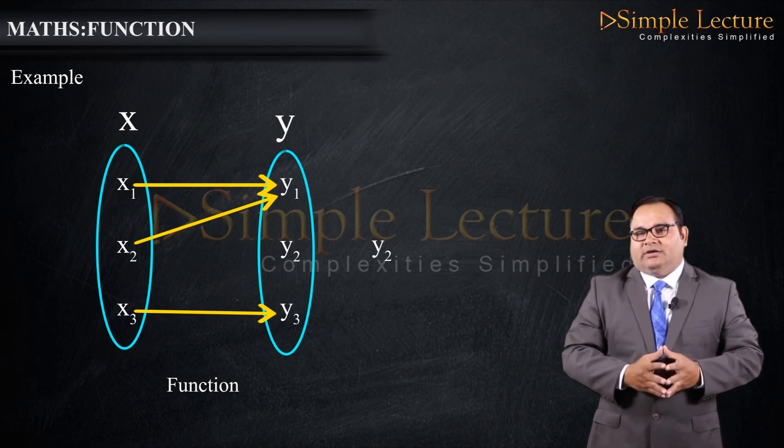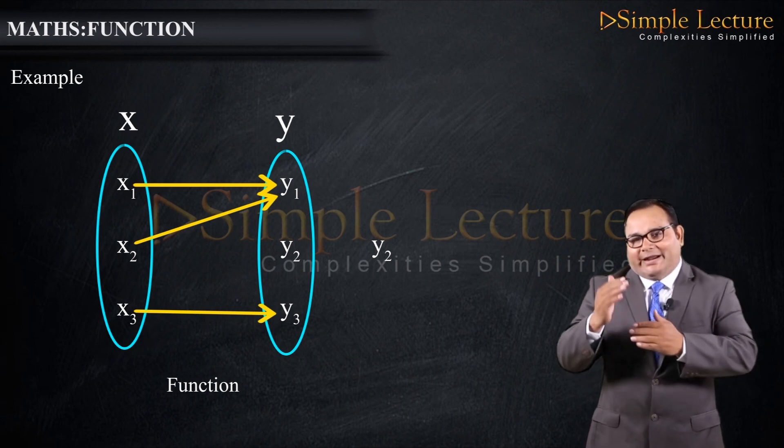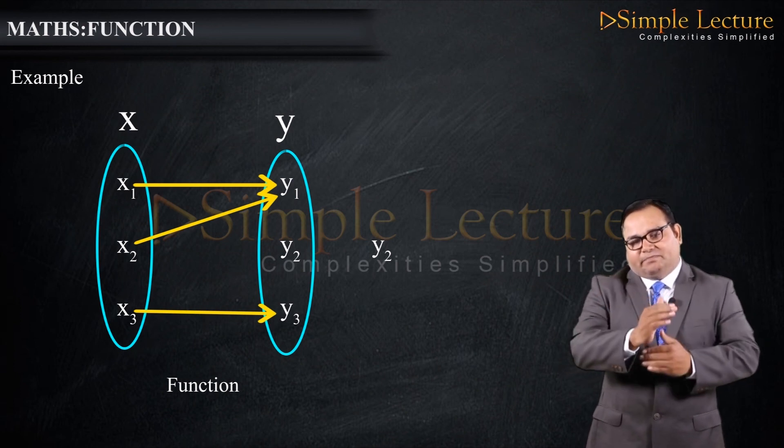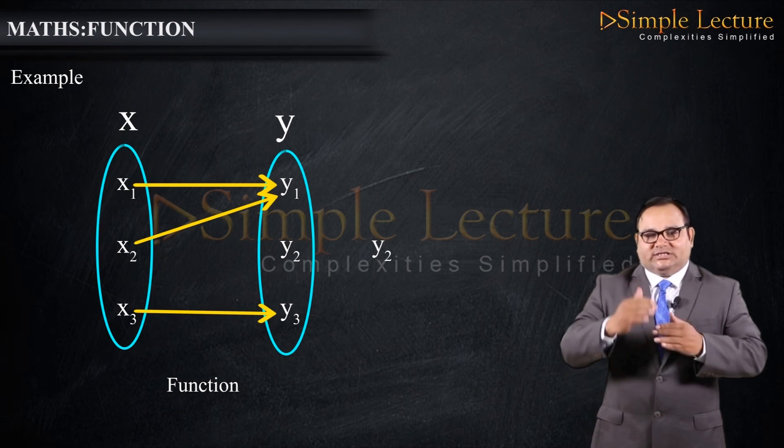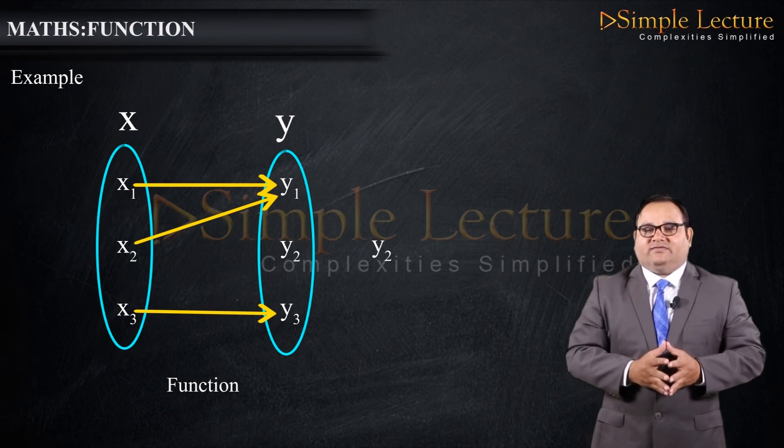For example, y2 is not having a pre-image in set X, but that is still acceptable. This is how we define functions.